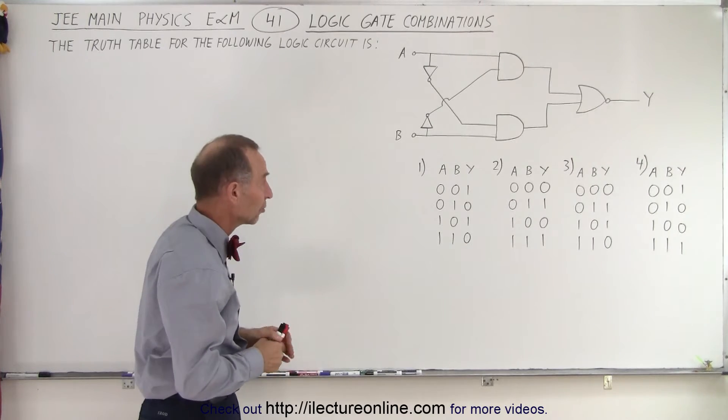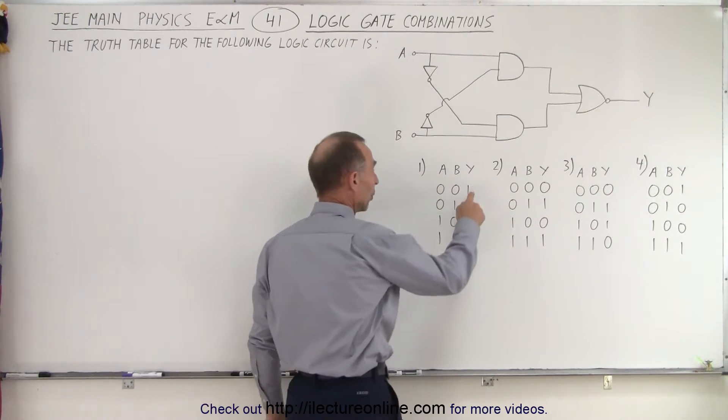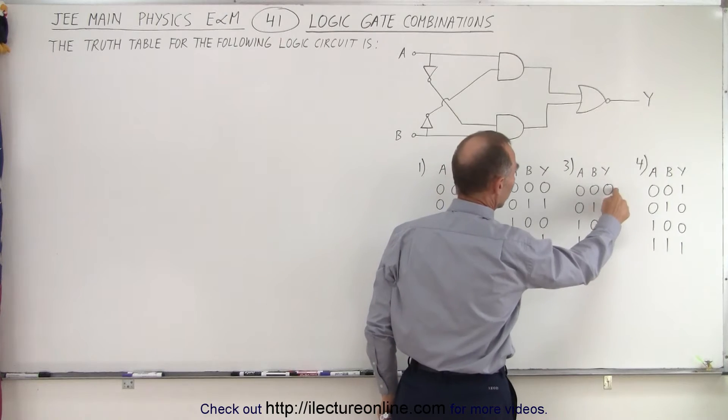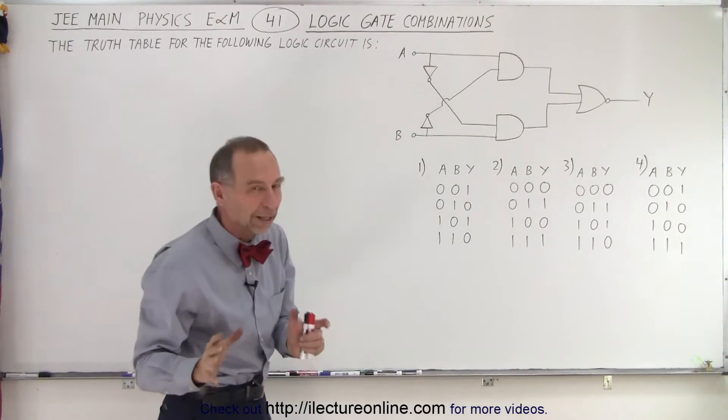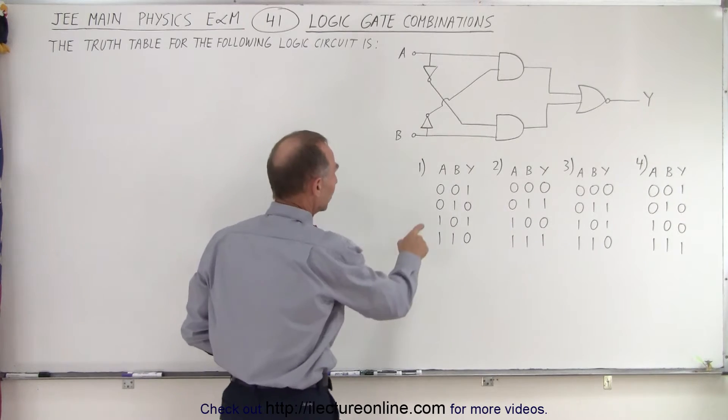And we have four possible combinations. At Y we have a 1 0 1 0, a 0 1 0 1, a 0 1 1 0, and a 1 0 0 1. Which of those four is the correct output given the outputs on A and B?